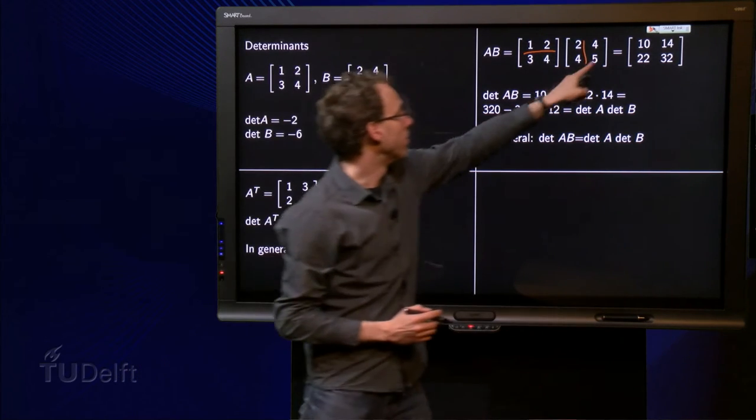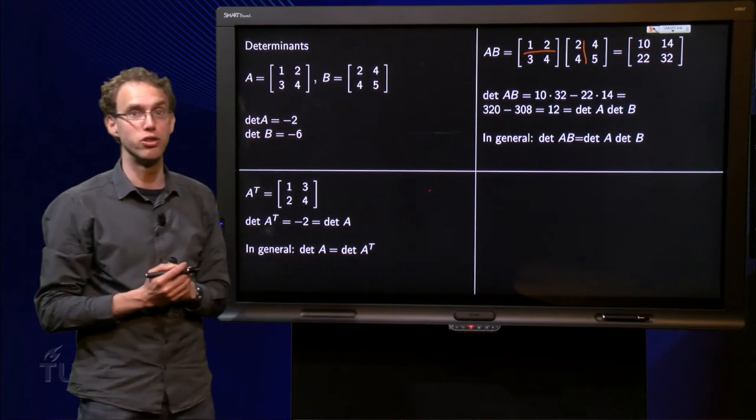Then we compute the determinant of AB. So 10 times 32 minus 22 times 14, 320 minus 308 equals 12. So the determinant of the matrix AB equals 12, and it happens to be exactly the same as the determinant of A times the determinant of B.